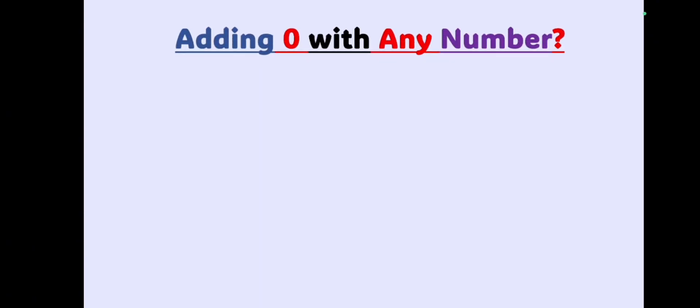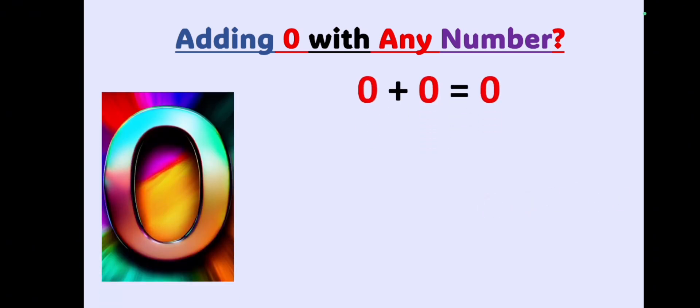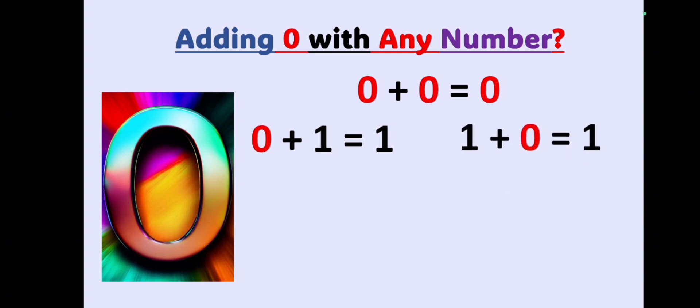Before we proceed, let's remember the golden rule of adding zero with any number once again. We have seen this in many classes, but it's very important to proceed with any number series. What will we get if we add zero to any number? If we add zero to zero it is zero. Zero plus one equals one, and one plus zero is also one.